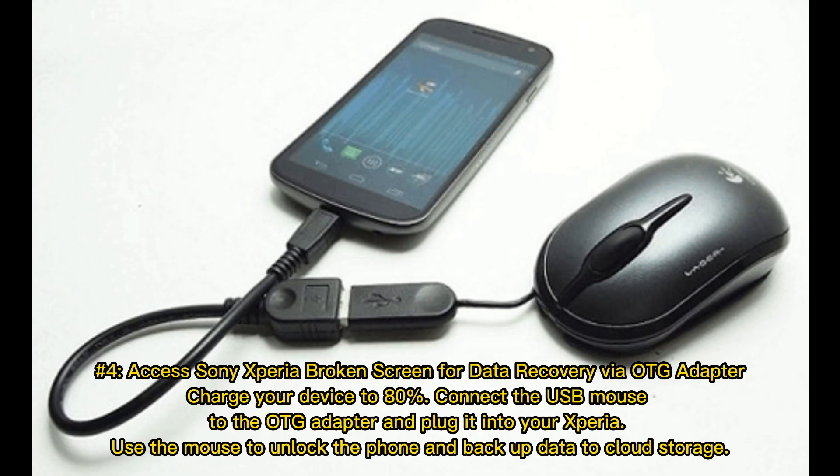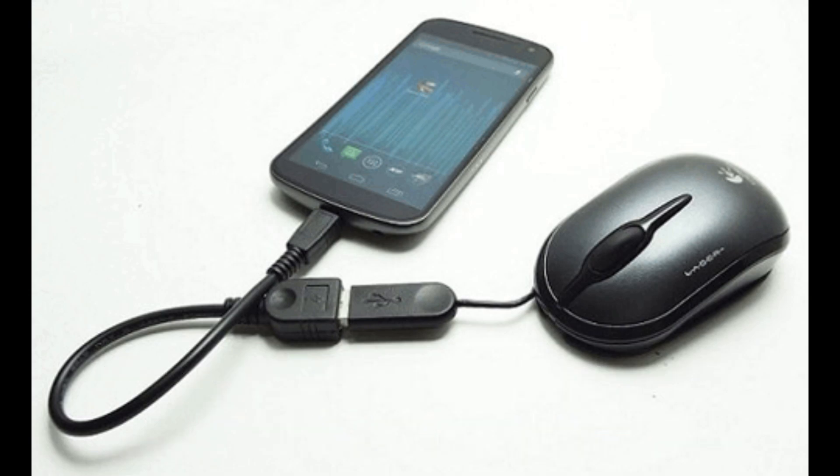Number 4: Access Sony Xperia broken screen for data recovery via OTG adapter. Charge your device to 80%. Connect the USB mouse to the OTG adapter and plug it into your Xperia. Use the mouse to unlock the phone and backup data to cloud storage.